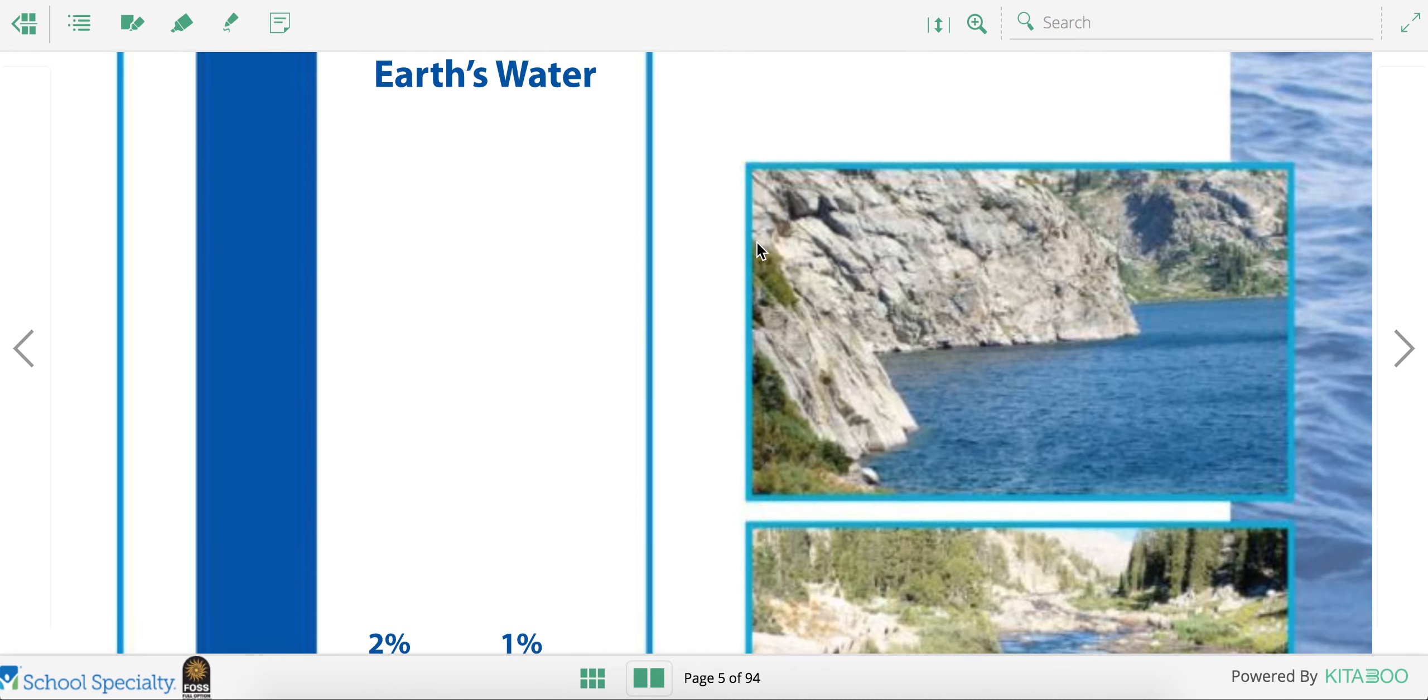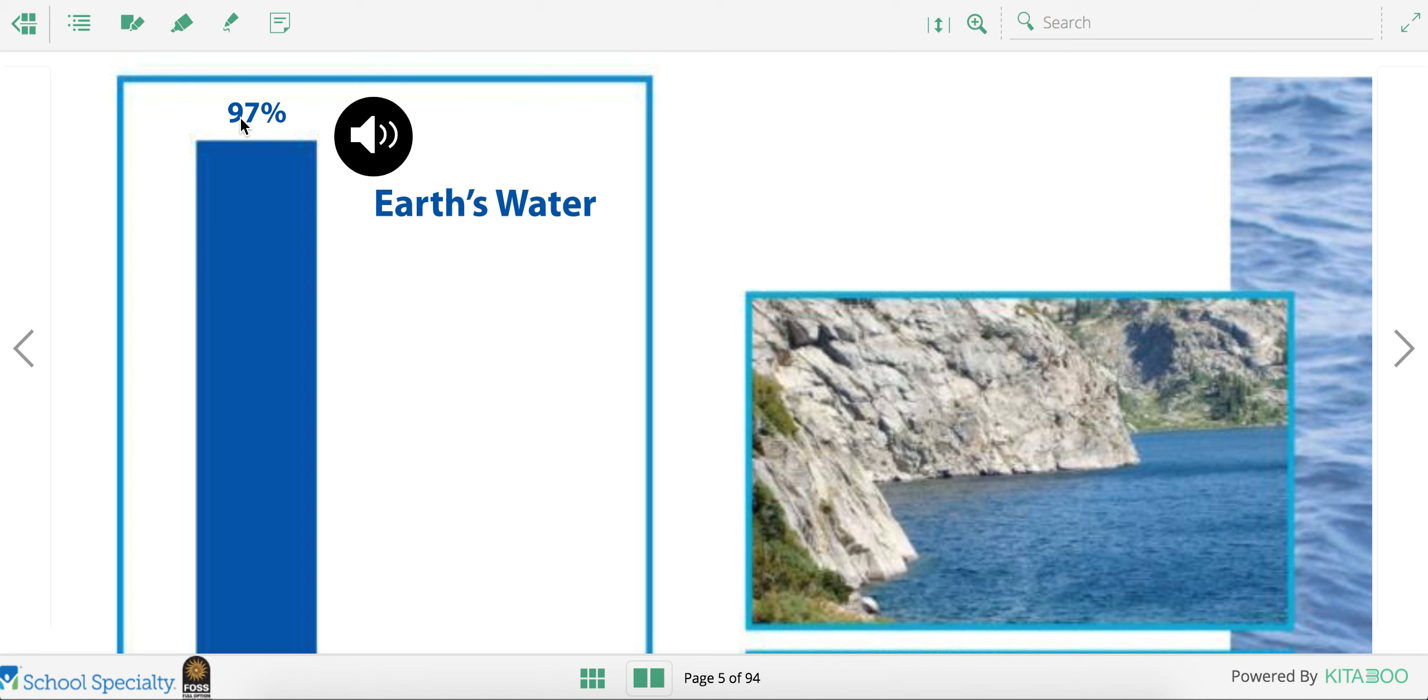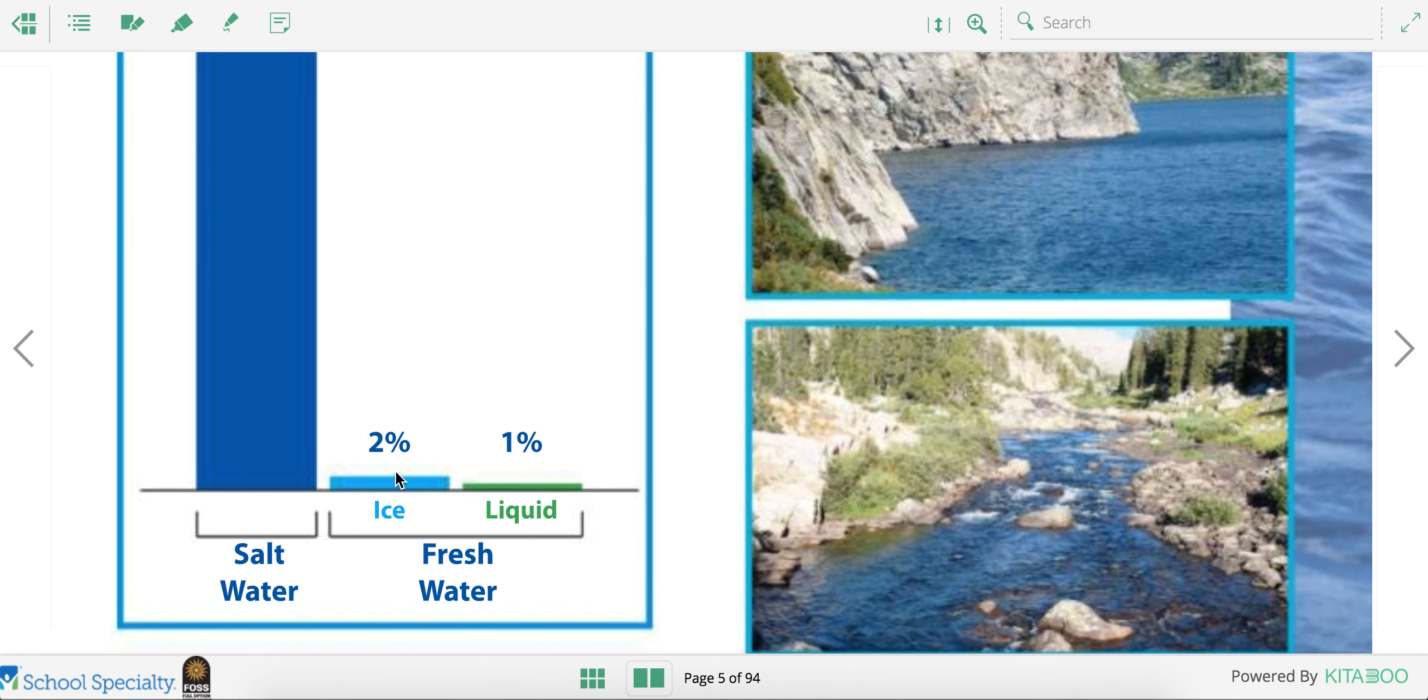So here's a chart looking at the Earth's water. Almost all of it is salt water, 97%. The rest is fresh water, but 2% of that is ice. And this is the 1% that's liquid that we can use.